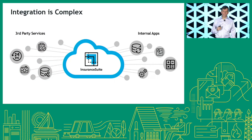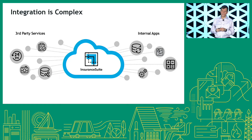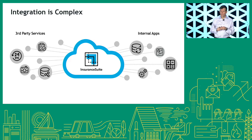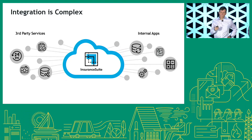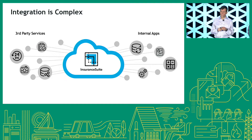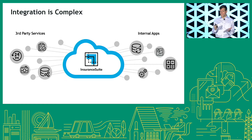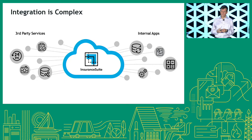Integration, regardless of industry, is complicated — and that's especially so with P&C. With an InsuranceSuite implementation, there are many integrations involved with the core system — easily 100 integrations. Each of these systems is different; they have different workflows, they're not necessarily designed to work together, and they might use different protocols and different file formats. So there's a large degree of complexity and variability. The question is how do we manage this and make it tractable?